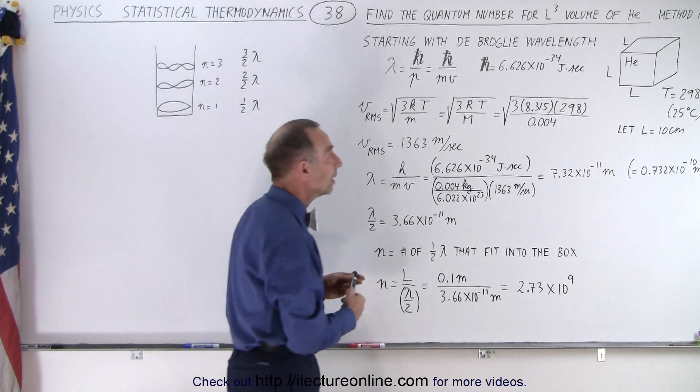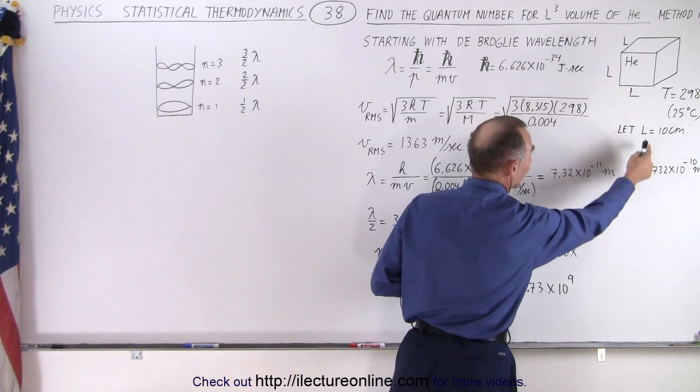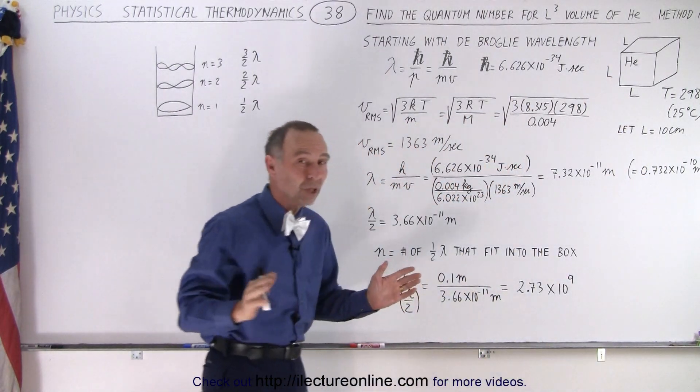In this case the particle will be an alpha particle, a helium nucleus, and the distance from one side to the other side is 10 centimeters. Alright, how do we do that?